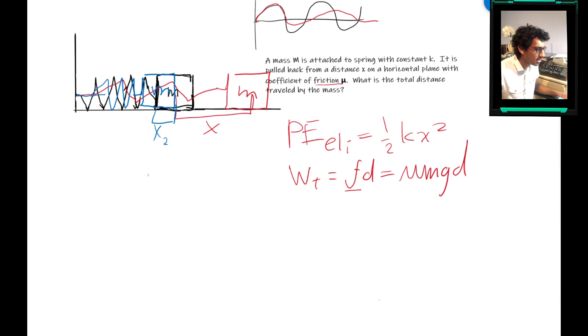Now, this x2, well first, this point would be the final potential elastic energy, so we can write that out. This is what it's getting converted into, one half k x2 squared.